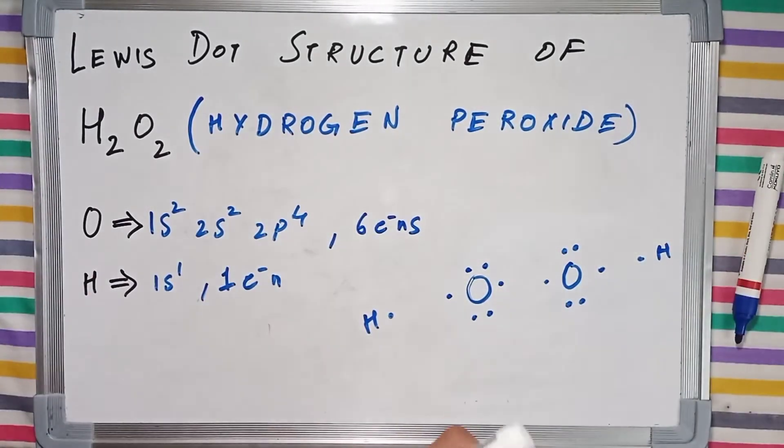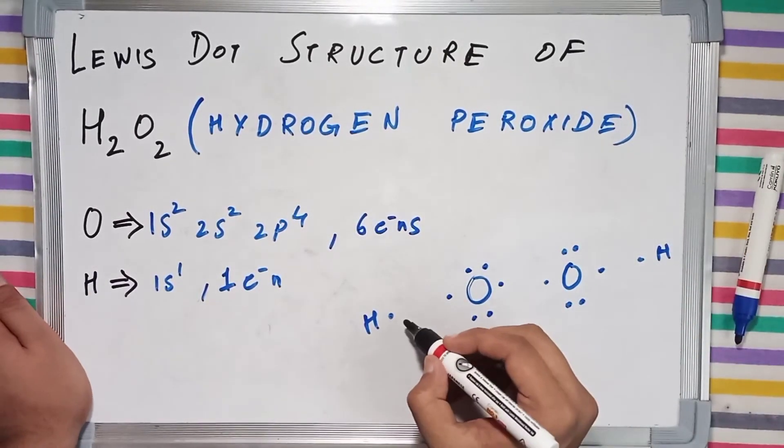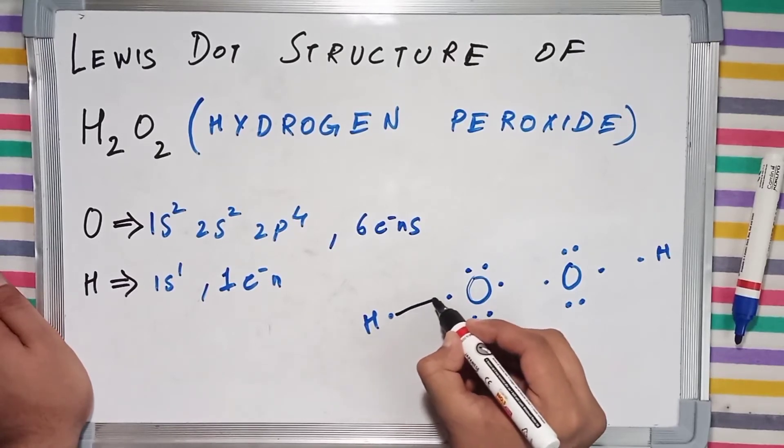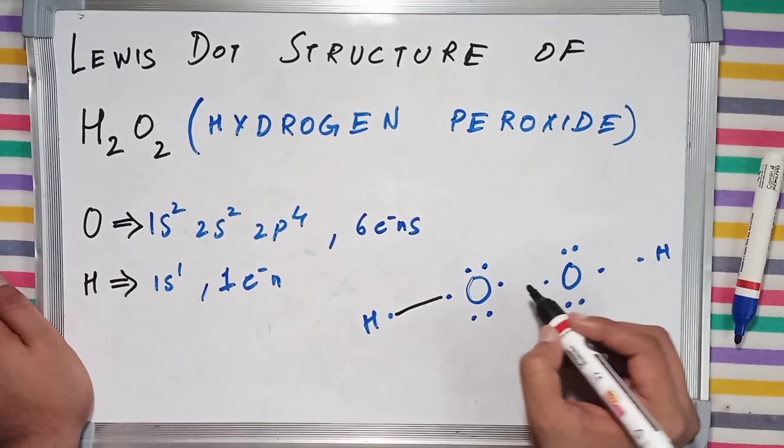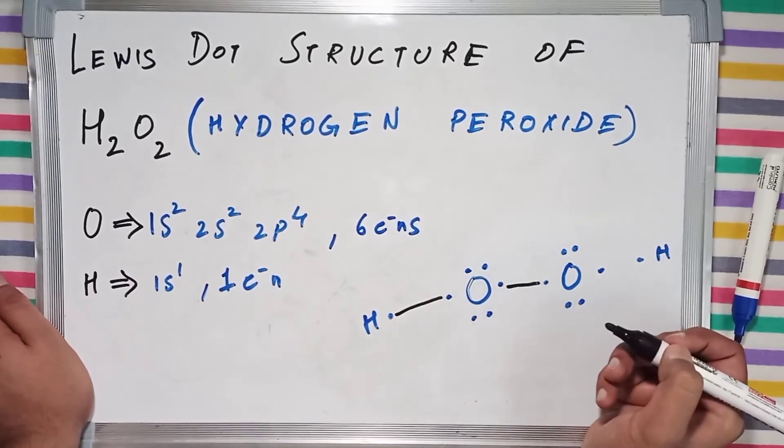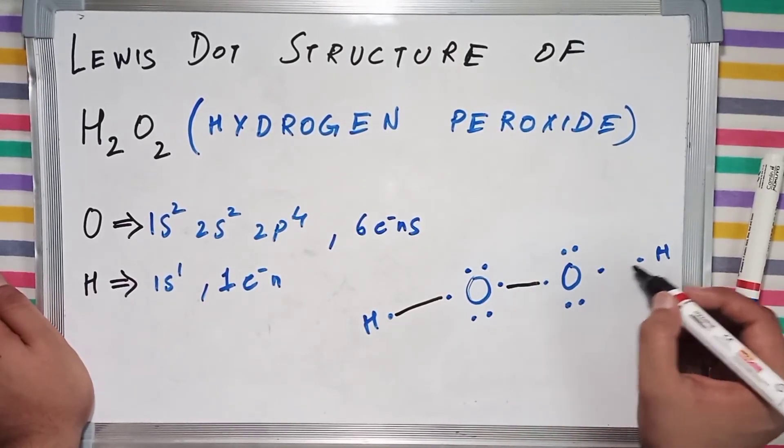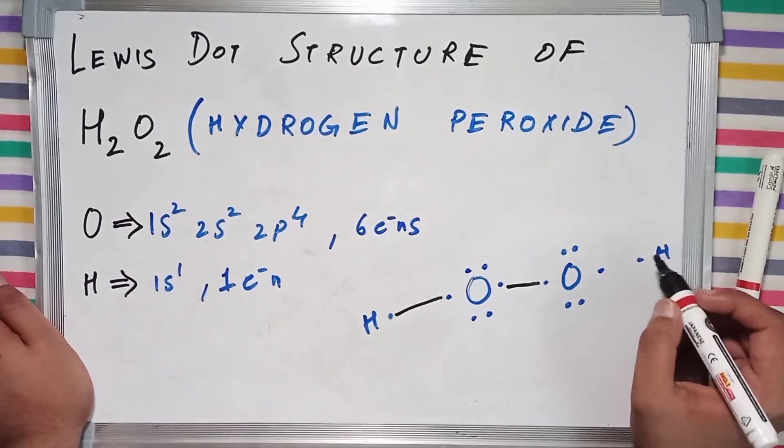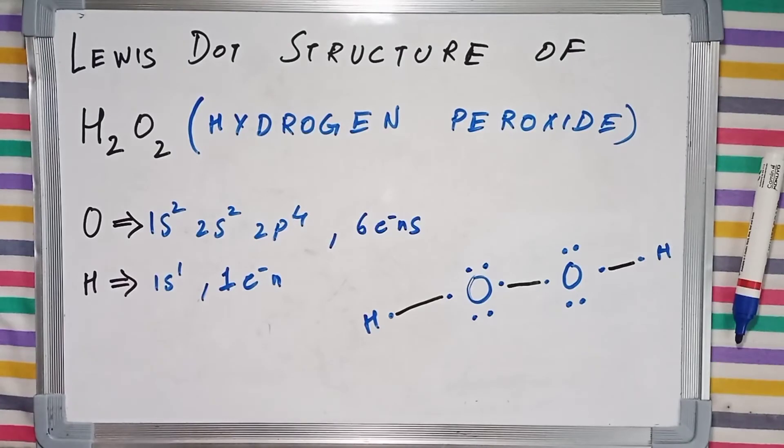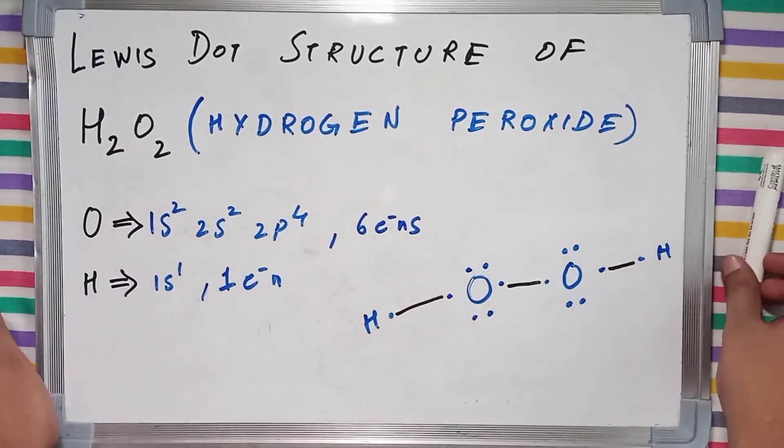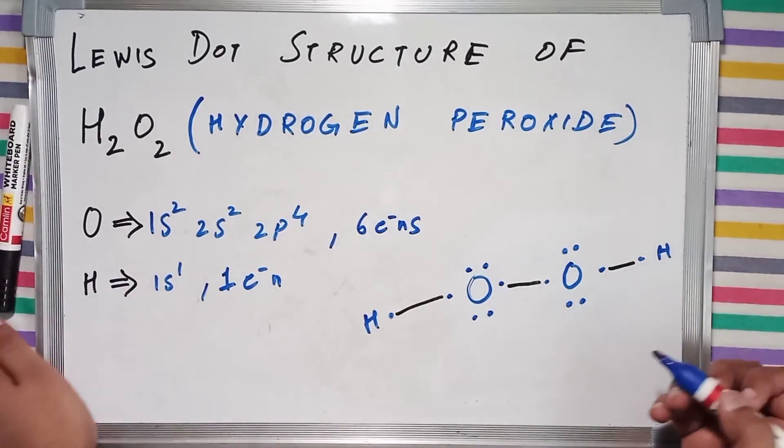And now hydrogen will make a single bond with the first oxygen. These two oxygens will make a single bond between them, and the second hydrogen will make a single bond with the second oxygen. And also let's check if their octets and duplets are complete.